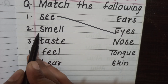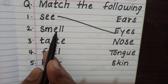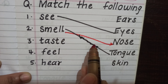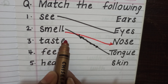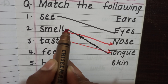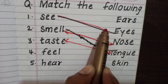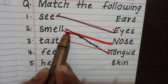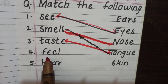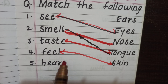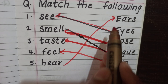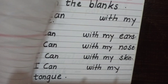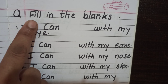Eyes — very good. Then second one: S-M-E-L-L, smell. Which body part helps us to smell? Nose helps us — yes, very good. And taste — tongue, very good. First one, see — eyes. Smell — nose. Test — tongue. Fill — skin. Hear — ear. Yes, that is correct.